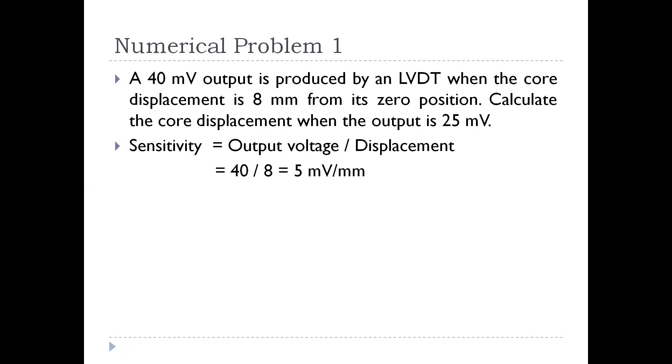Now we are going to use this sensitivity value to determine the new input value. We know that displacement is equal to output voltage by sensitivity. So output voltage is given as 25 and sensitivity we have calculated as 5mV per mm. So substituting it, I will be getting the new displacement as 5 mm.